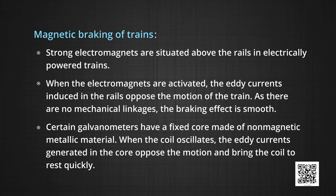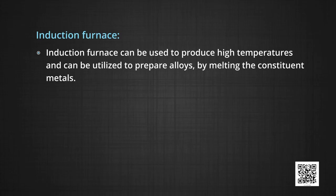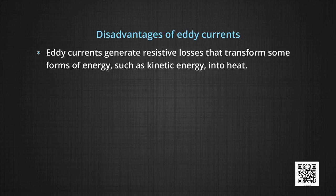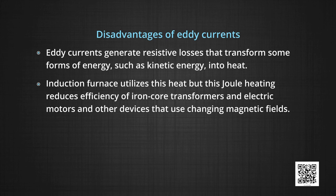Certain galvanometers have a fixed core made of non-magnetic metallic material. When the coil oscillates, eddy currents generated in the core oppose the motion and bring the coil to rest quickly. Another application is that of induction furnace. Induction furnace can be used to produce high temperatures and can be utilized to prepare alloys by melting the constituent metals. A high frequency alternating current is passed through a coil which surrounds the metal to be melted. The eddy currents generated in the metals produce high temperature sufficient to melt it. Induction furnace utilizes this heat.